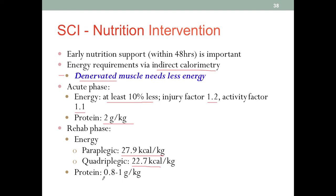Protein intake in the rehab phase will be the usual 0.8 to 1 gram per kilogram, since the acute phase has passed. However, if there are long-term complications like pressure ulcers, healing that open wound will require supplying more energy and more protein — that would be an important consideration.